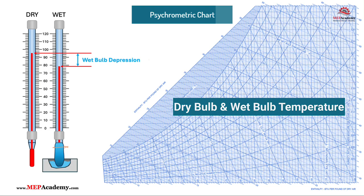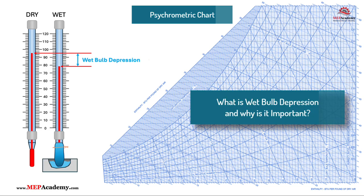Dry bulb temperature and wet bulb temperature are both essential in understanding air properties, especially in HVAC applications. We'll explain these two temperatures and how they relate to evaporative cooling and relative humidity using a psychrometric chart.